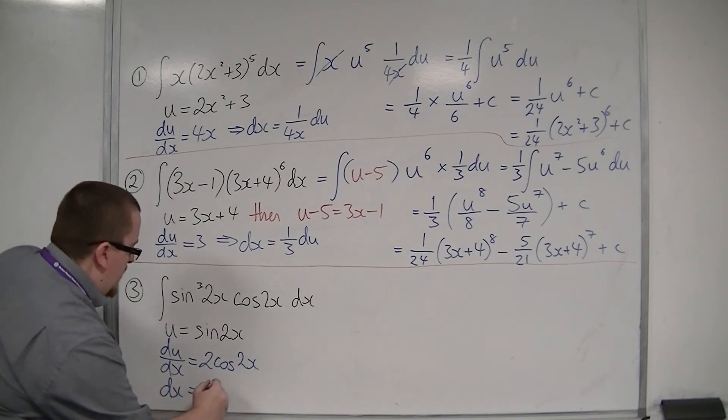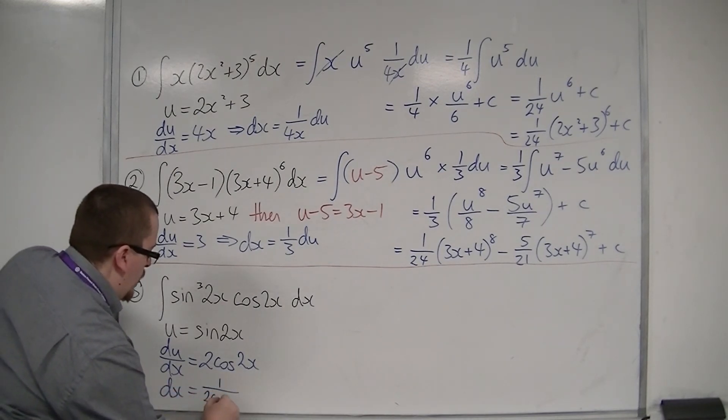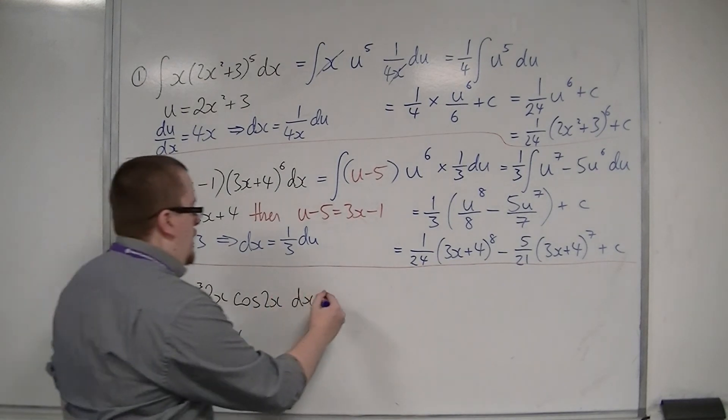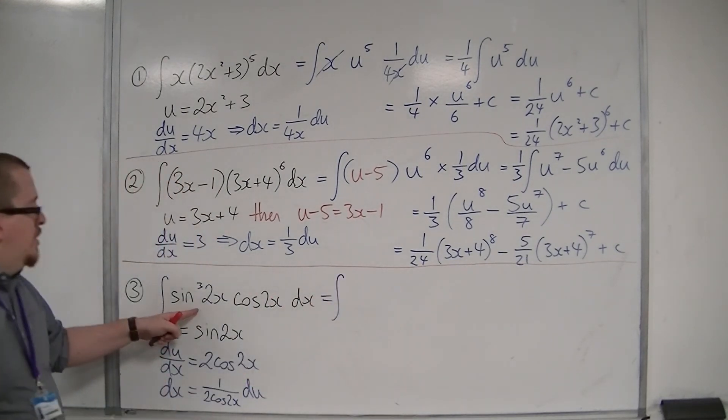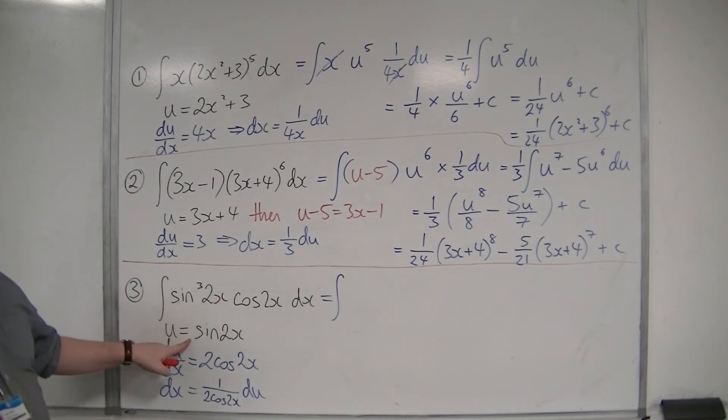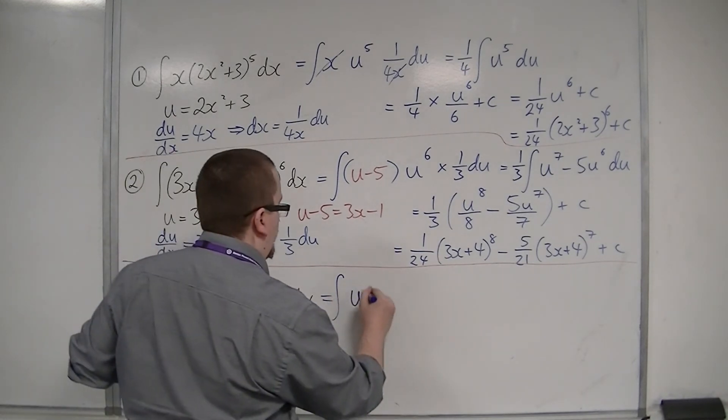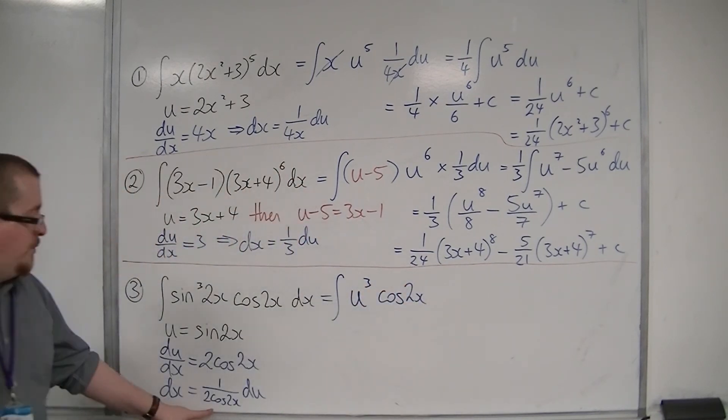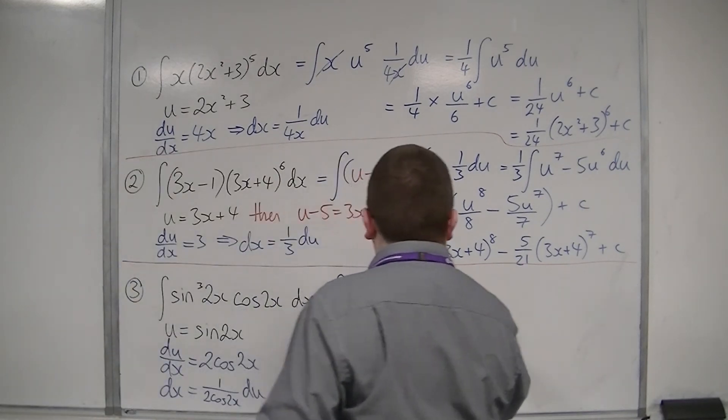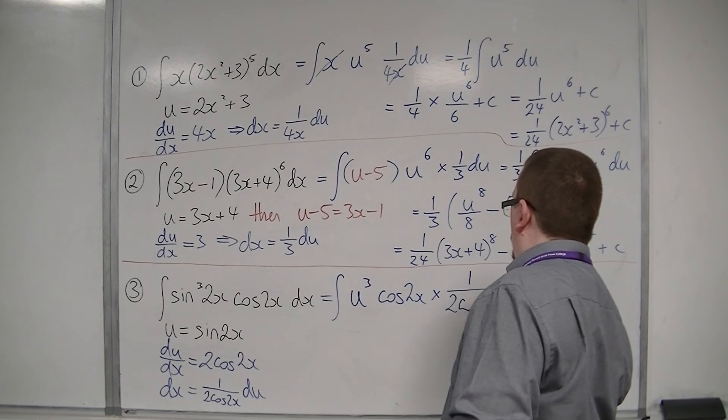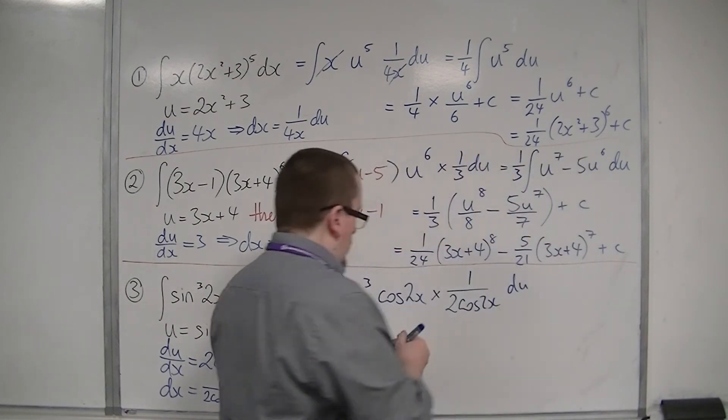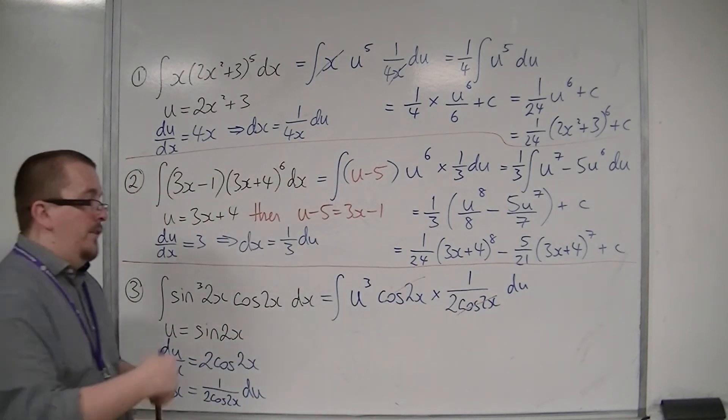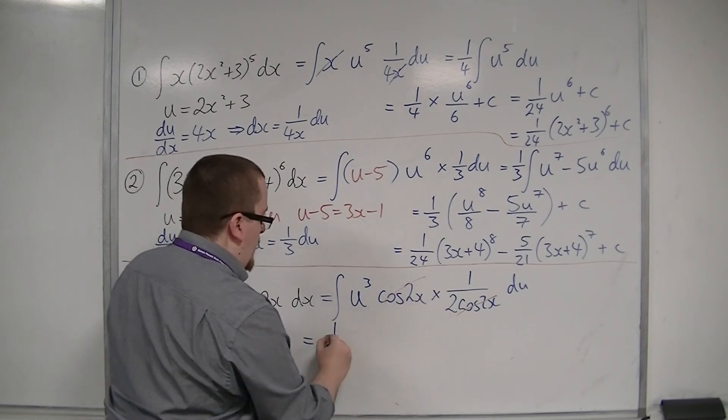So dx is 1/(2cos2x) du. I've got sin³(2x), which is u³. I've got cos(2x), and dx, replaced with 1/(2cos2x) du. Now, the cos(2x) that's there cancels with the cos(2x) that's there. So that's good. The half can come out of the front of the integral.